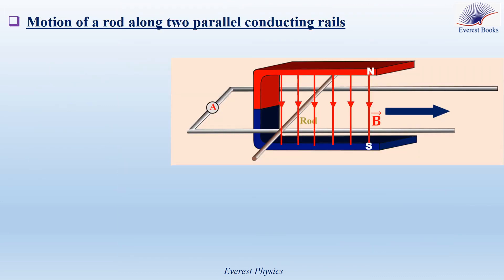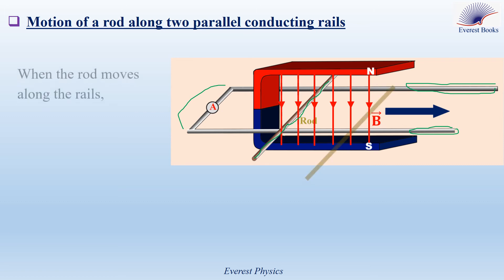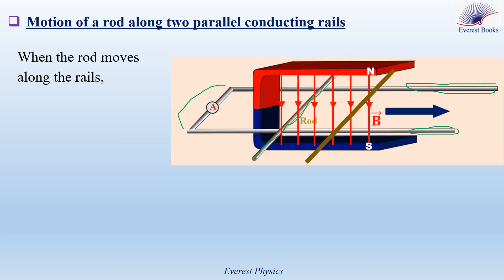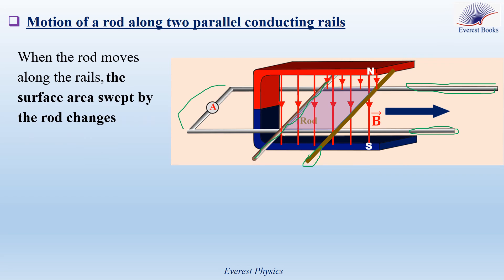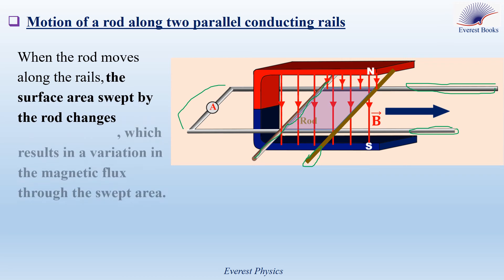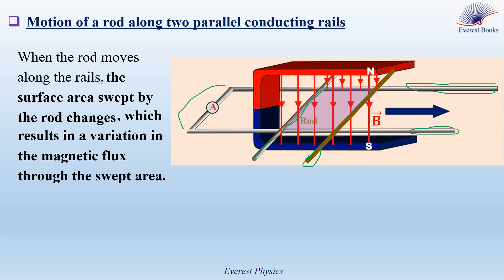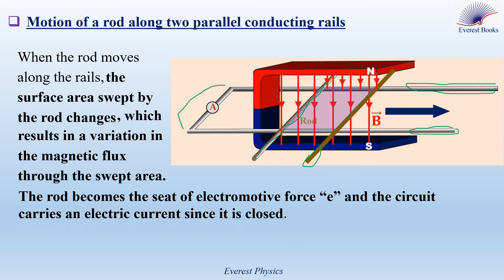Consider the figure. We have two parallel conducting rails — the first one and the second one. The two rails are connected from the left side by an ammeter and from the right side by a conducting rod. The rod is given an initial horizontal velocity directed to the right. When the rod moves along the rails, the surface area swept by the rod changes, which results in a variation in the magnetic flux through the swept area. Therefore, the rod becomes the seat of electromotive force E and the circuit carries an electric current since it is closed.